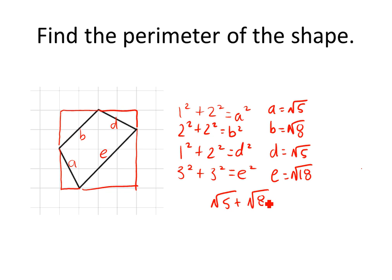I'm going to put this into my calculator: the square root of 5 plus the square root of 8 plus the square root of 5 plus the square root of 18. I got 11 — rounding to the tenths place, that's 11.5 units. That is how we find the perimeter of that shape. It's a little harder because we have to approximate by creating right triangles to find each side length, then add all the side lengths together.